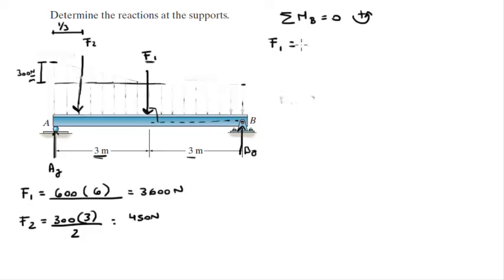So let's assume counterclockwise is positive. The first moment created by F1 is given by the distance times F1. So this is F1 times 3, plus the moment created by F2, which is this distance, which is a distance of 5, of course, so it's F2 times 5, minus this distance because the AY is turning this whole thing clockwise. So it's minus AY times the whole distance, which is 6, and that is equal to 0.